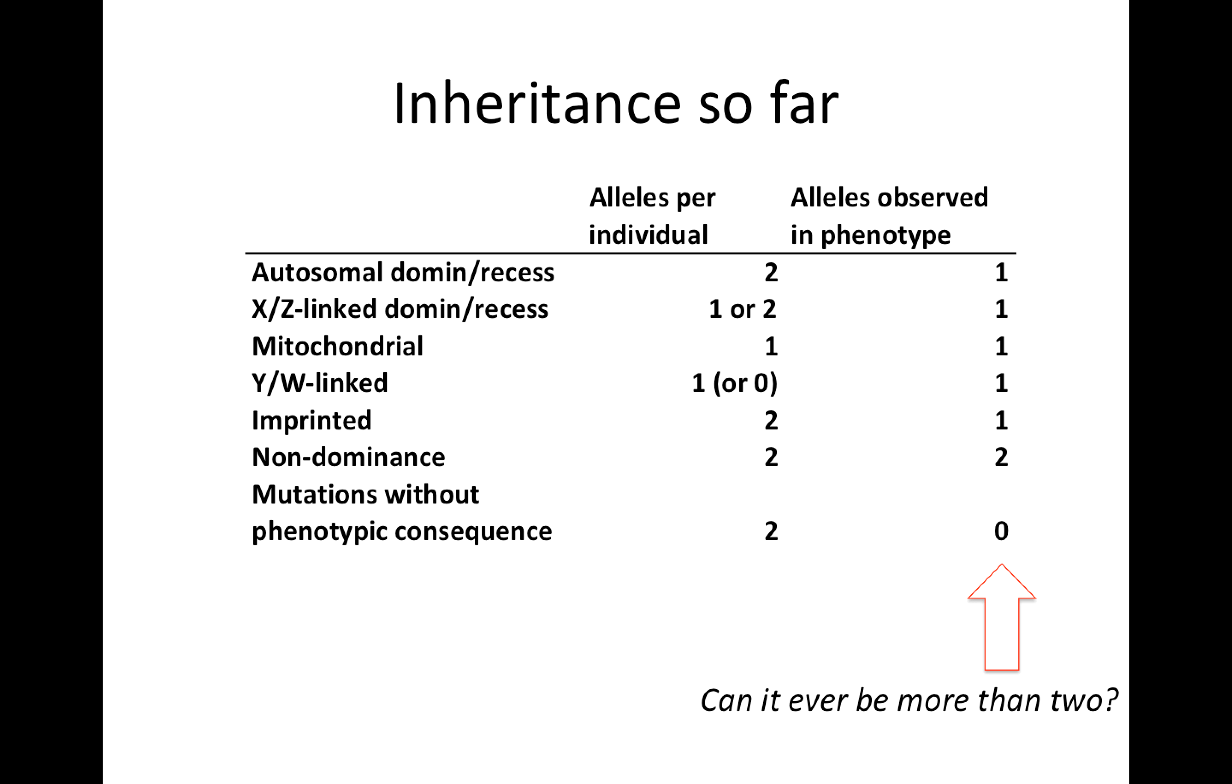So the next question is, can it ever be more than two? And that's actually going to be the topic for our next lecture. And so we'll leave it there. So just to sum up, we've talked about these one, two, three, four, five, six, seven different kinds of inheritance and how they impact our phenotype.